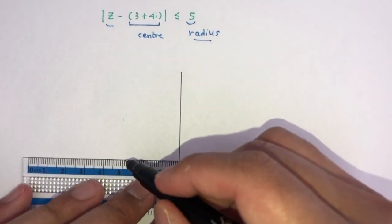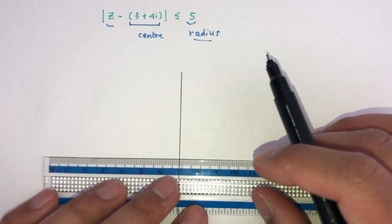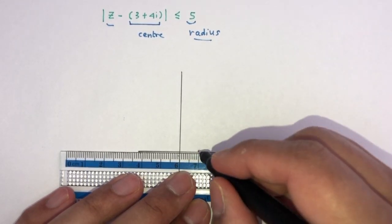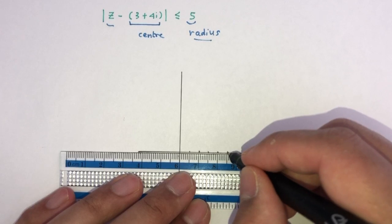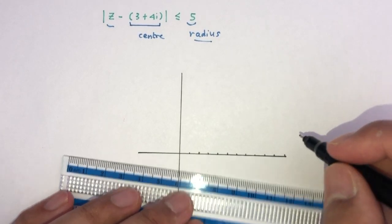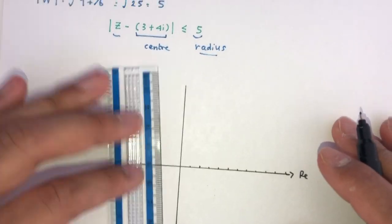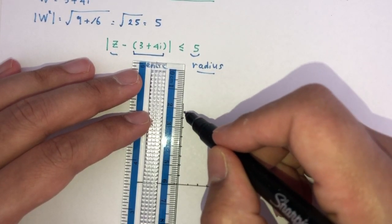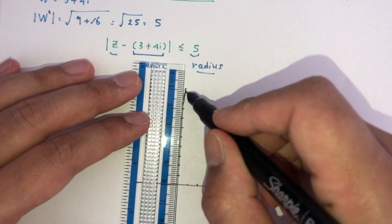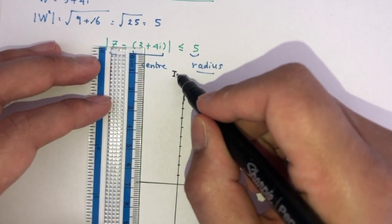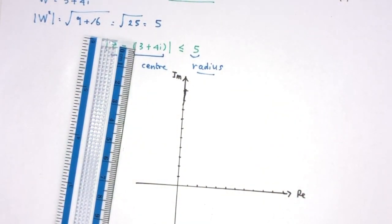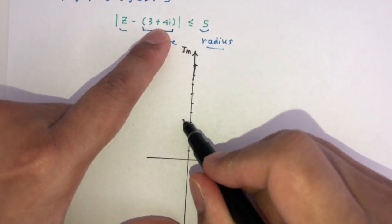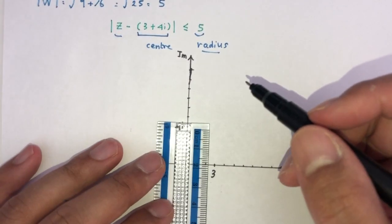On the Argand diagram, the real axis runs horizontally and the imaginary axis runs vertically. The center is at the point (3, 4), which is 3 along the real axis and 4 up the imaginary axis. Mark this as the center.